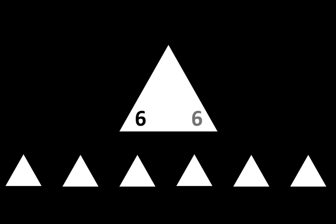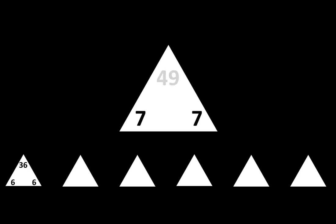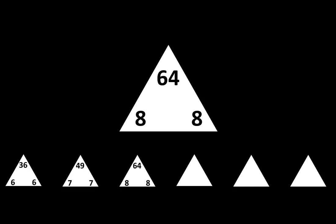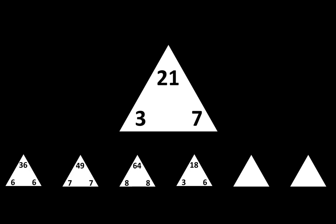Let's move to the next row. The next one is 6 times 6 is equal to 36. The next one is 7 times 7 is equal to 49. The next one is 8 times 8 is equal to 64. The next one is 3 times 6 is equal to 18. The next one is 3 times 7 is equal to 21. The next one is 3 times 8 is equal to 24.